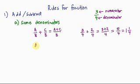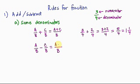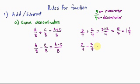If you have A over B minus C over B, just look at the denominator B and copy it, then perform the subtraction on the numerators. For example, 3 over 4 minus 2 over 4: copy the denominator 4, and then 3 minus 2 is 1, so the final answer is 1 over 4.